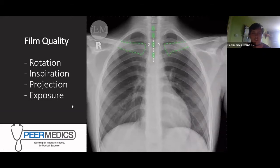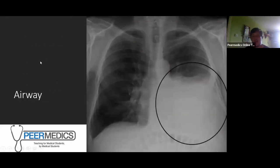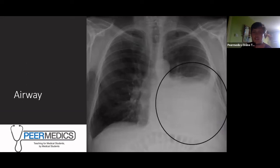The best way to interpret chest X-rays is using the ABCDE approach. This is taught by resources like Geeky Medics and is encouraged by Liverpool Medical School and others because it's a really systematic way to approach X-rays — similar to how ABCDE is used in the primary assessment of a patient.